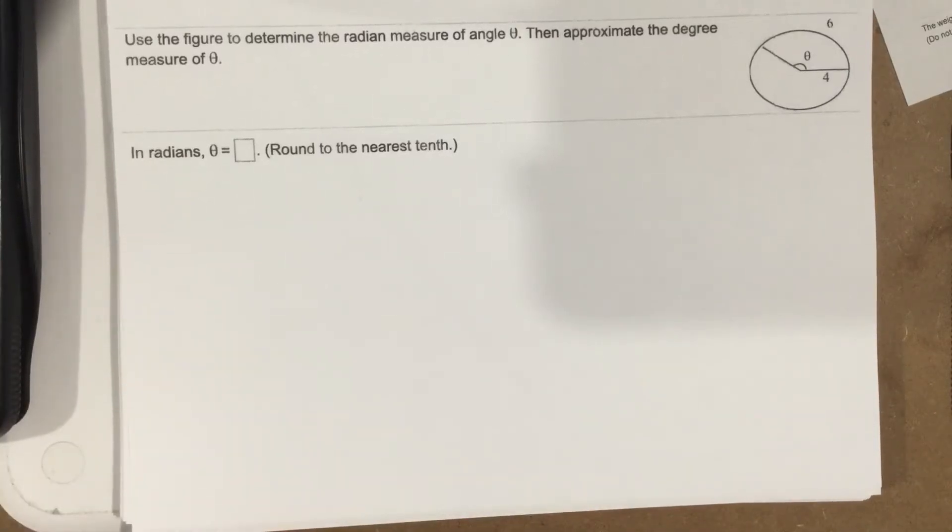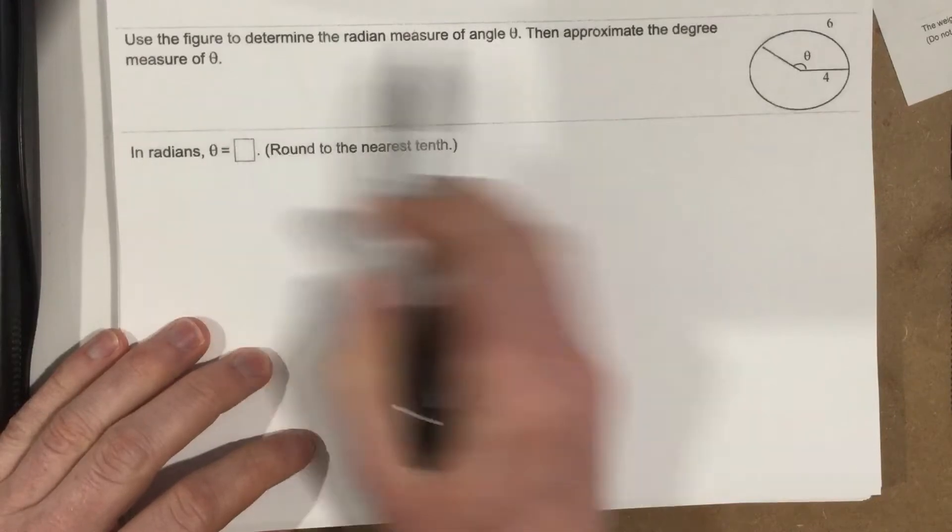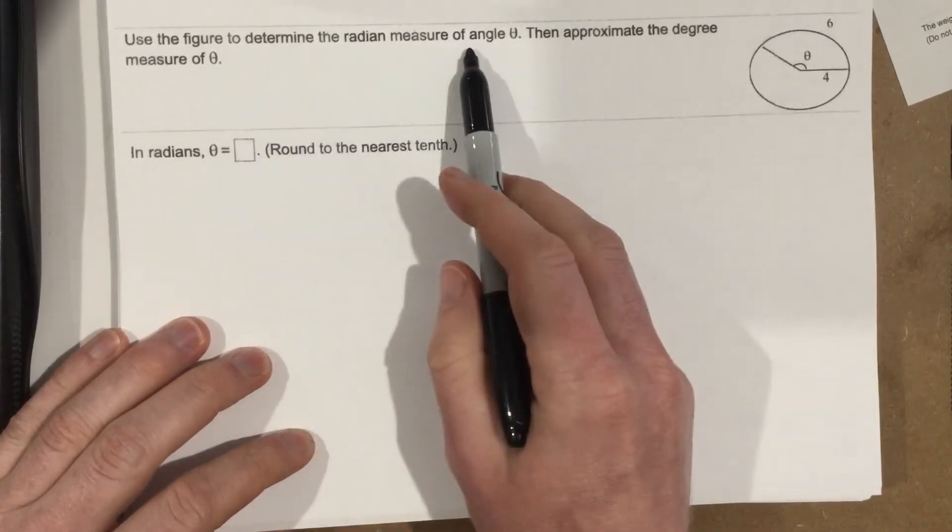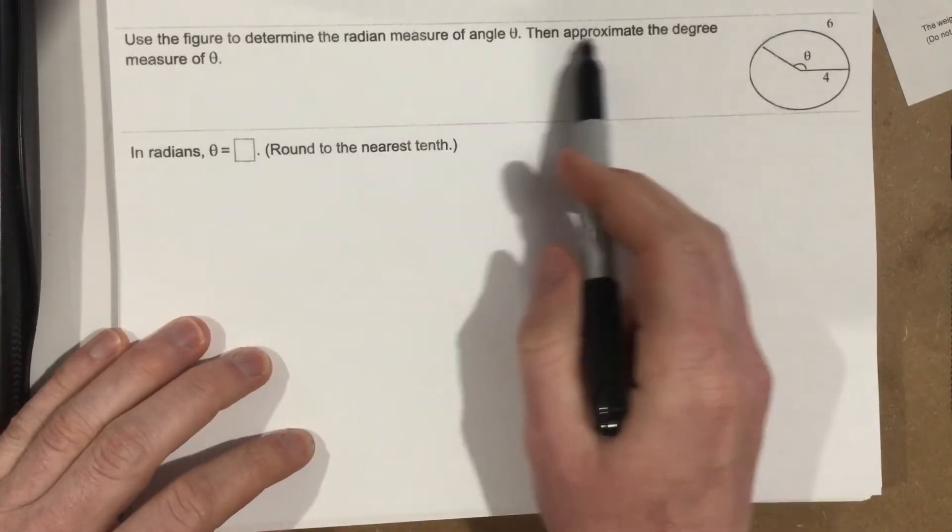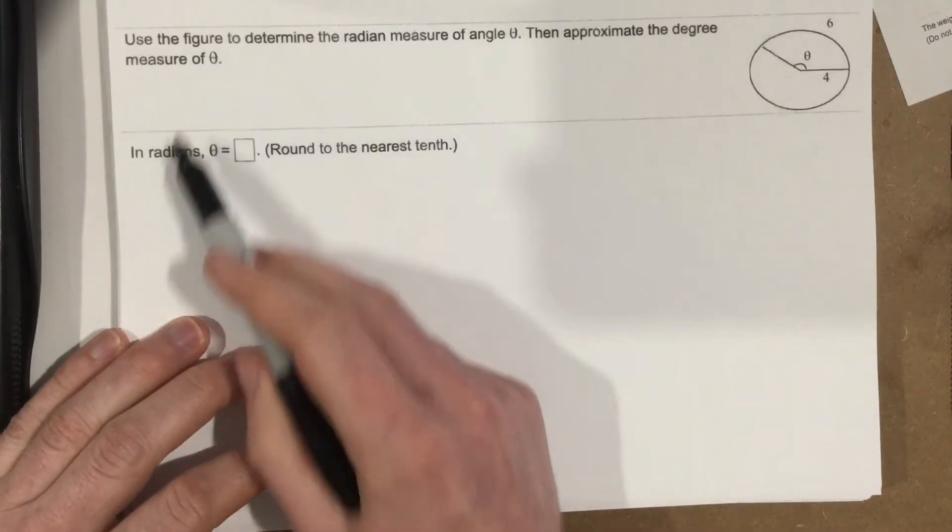This is problem number two from section 6.1. This problem wants us to use the figure to the right to determine the radian measure of angle theta, then approximate the degree measure of theta.